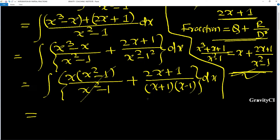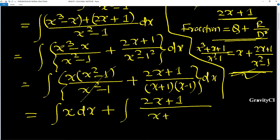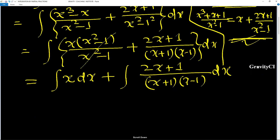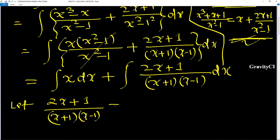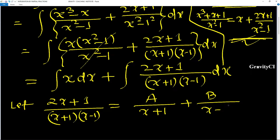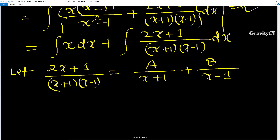After this, we separate the integration terms, so this becomes ∫x dx plus ∫(2x + 1)/[(x + 1)(x - 1)] dx. To integrate the second term, we apply partial fractions. Let (2x + 1)/[(x + 1)(x - 1)] = A/(x + 1) + B/(x - 1).